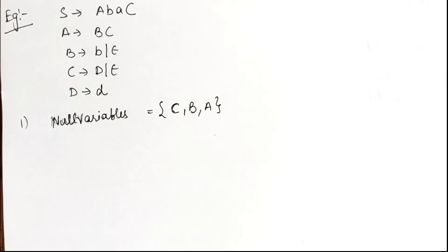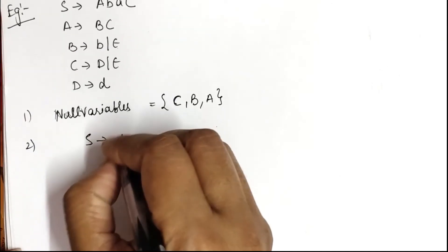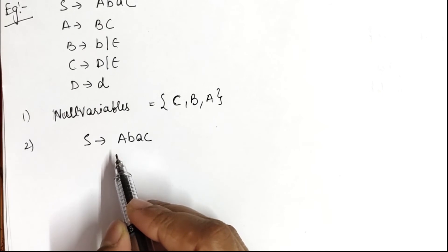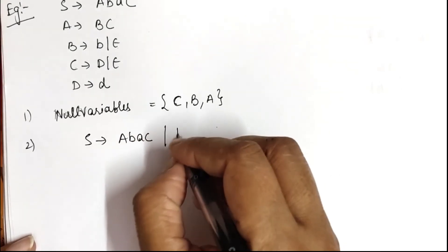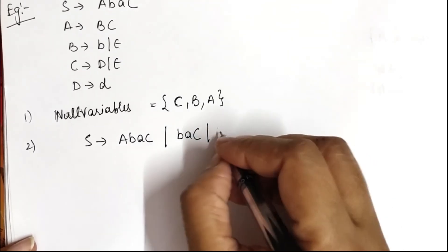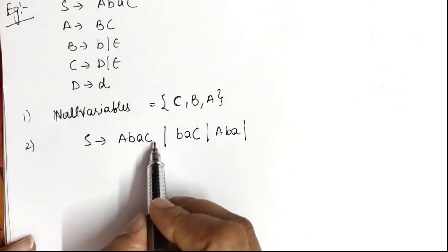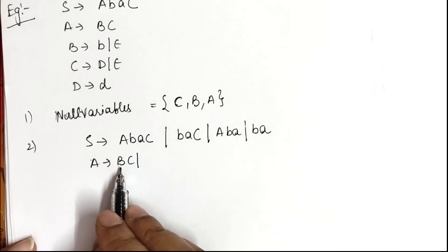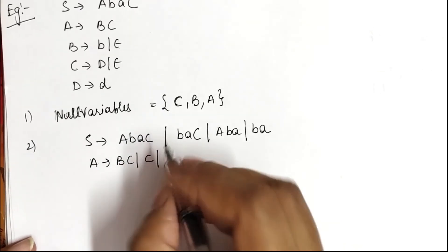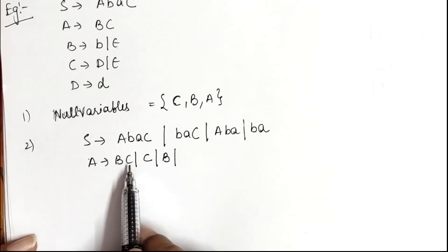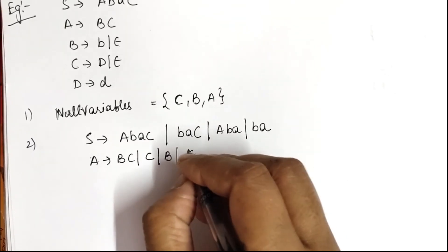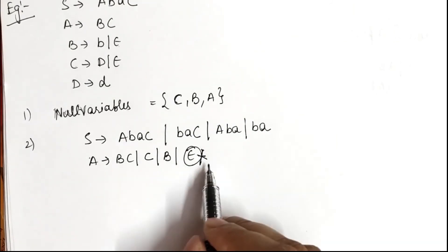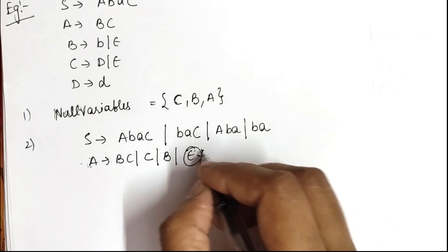We check the right hand side of every production. For S derives A B A C: substituting A as epsilon gives B A C; substituting C as epsilon gives A B A; substituting A and C both as epsilon gives B A. For A derives B C: substituting B as epsilon gives C; substituting C as epsilon gives B; substituting both B and C as epsilon would give A derives epsilon, but we do not write this because A is not the starting symbol.